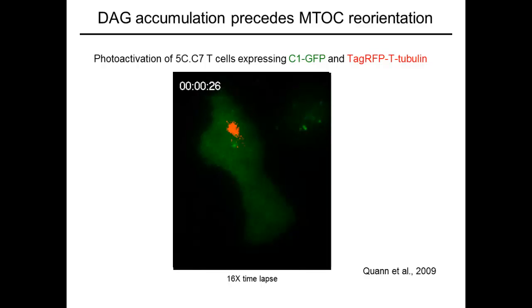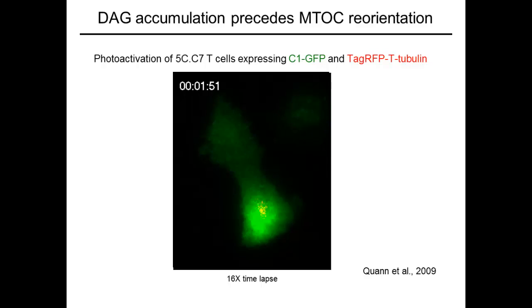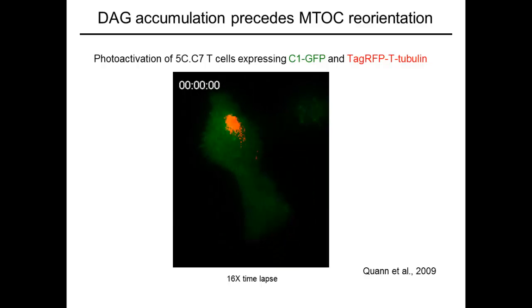This strongly suggested to us that the DAG accumulation guides MTOC movement, and indeed perturbations that disrupt the ability of the T-cell to maintain a polarized DAG gradient, or to respond to one, inhibit MTOC reorientation.